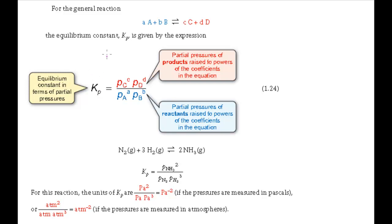The equilibrium constant Kp takes the same form as that for Kc but with partial pressures instead of concentrations in the expression. Products are on the top line, reactants on the bottom as before, each partial pressure raised to the stoichiometric coefficient in the equation. Like Kc, Kp is constant at a particular temperature. So for the ammonia reaction, Kp is equal to the partial pressure of the product ammonia squared, divided by the partial pressure of nitrogen, multiplied by the partial pressure of hydrogen raised to the power 3.